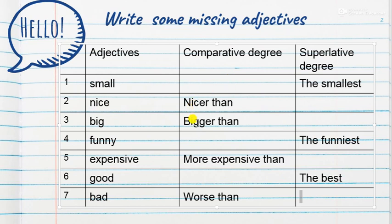Nicer and bigger are the same. And what about superlative degree? You have to add EST. And before the adjective, we have to use the article.